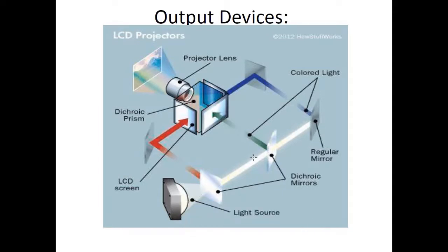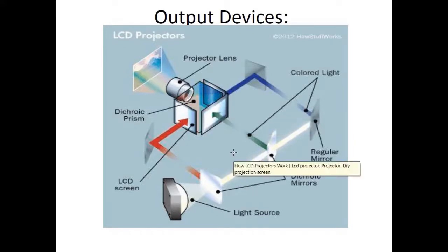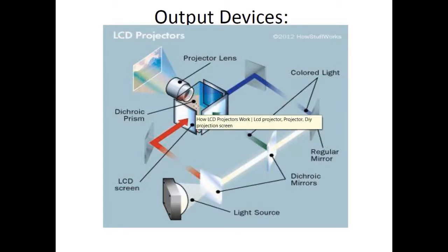To summarize how an LCD projector works: a xenon lamp passes light through dichroic mirrors, which break the light into red, green, and blue. There are three tiny LCD screens which mimic the image to be shown; when light passes through these three LCD filters, three different versions — one red, one green, one blue — of the actual image are obtained. These three images then go into a special prism which combines them into one colorful image, which is then passed through a lens and projected onto the screen.